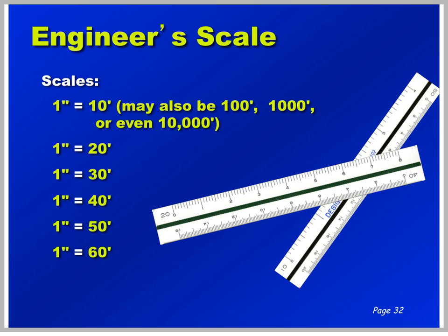Now let's take a look at the Engineer's Scale — in my opinion, a bit easier to understand. Remember, what we're dealing with here is 1 inch equals 10 foot, 20 foot, 30 foot, 40 foot, 50 foot, or 60 foot. And with the 10 scale equaling 10 foot, it can also equal 100, 1,000, or even 10,000 feet — by simply just adding zeros.